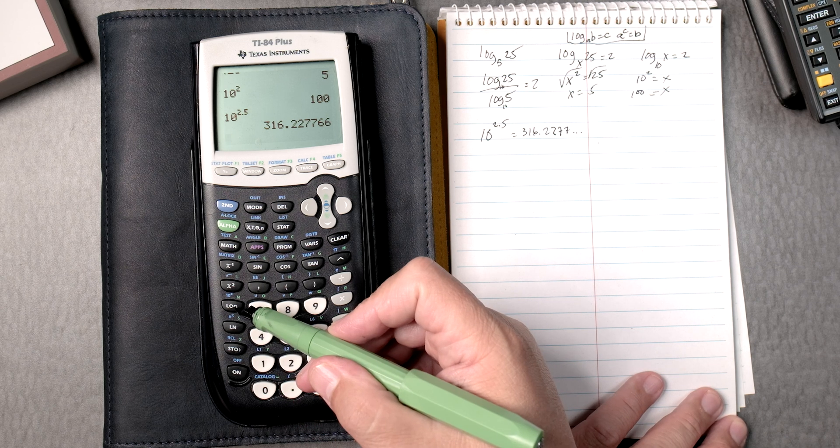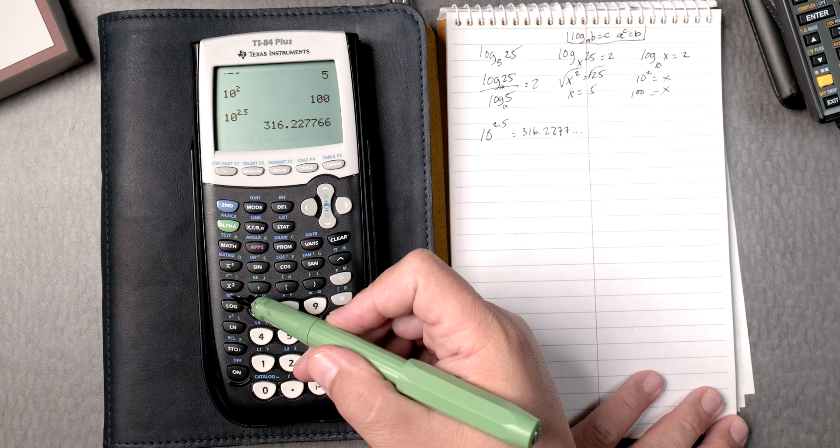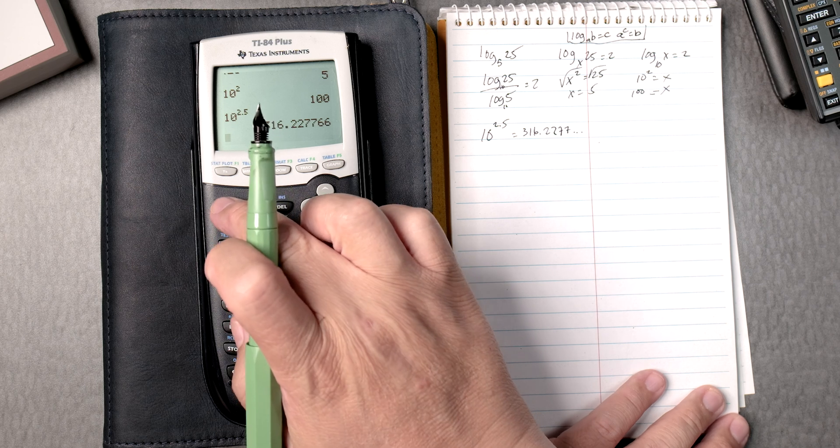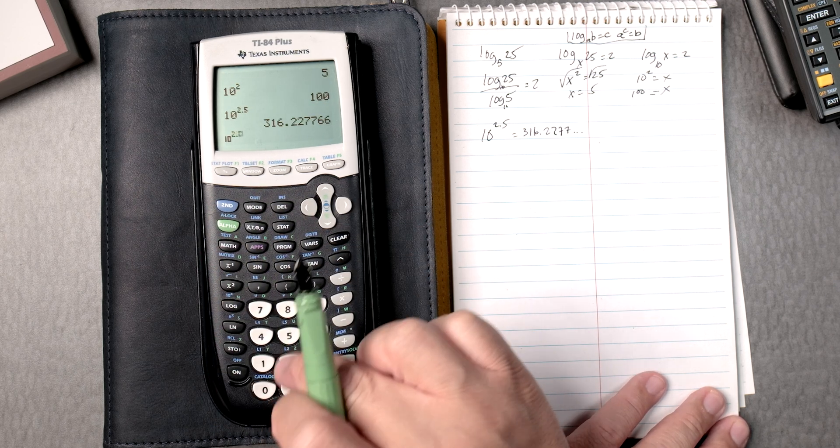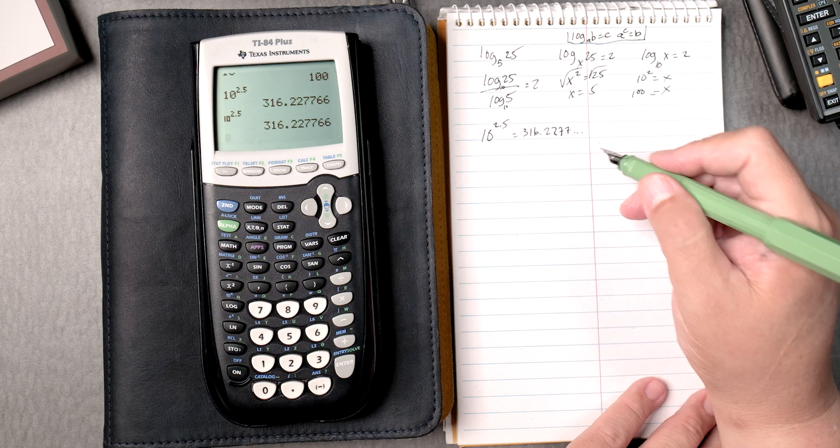If you look at the log right above it, it gives you the antilog. So if you press 2nd, 10 to the x, and 2.5, and then enter, it gives you the same answer.